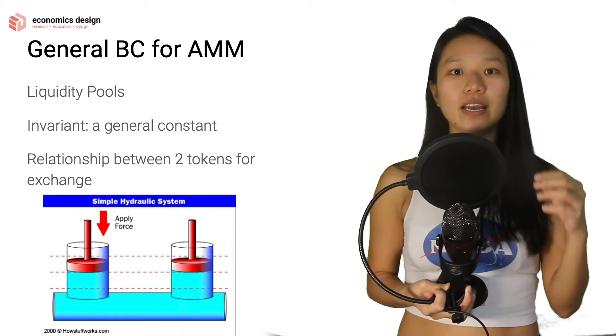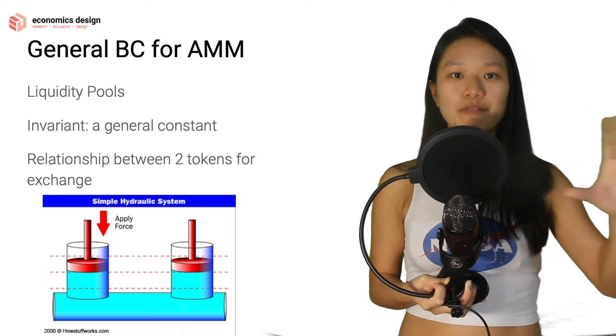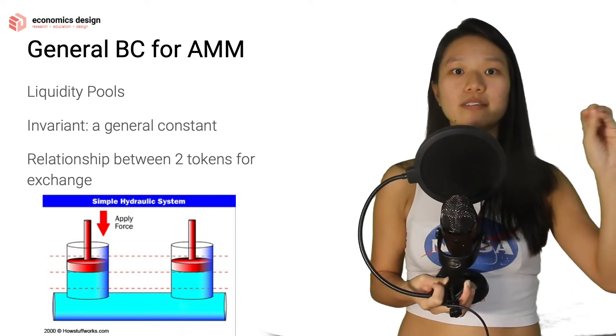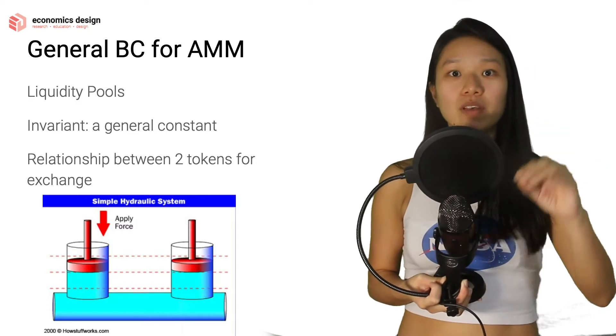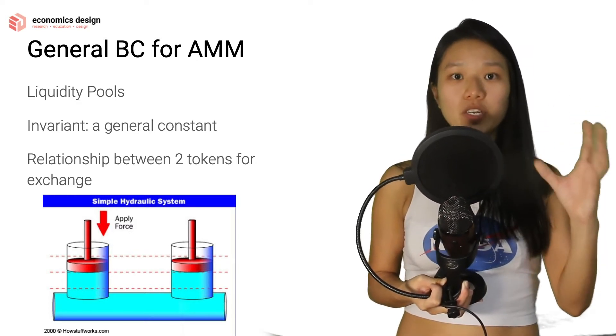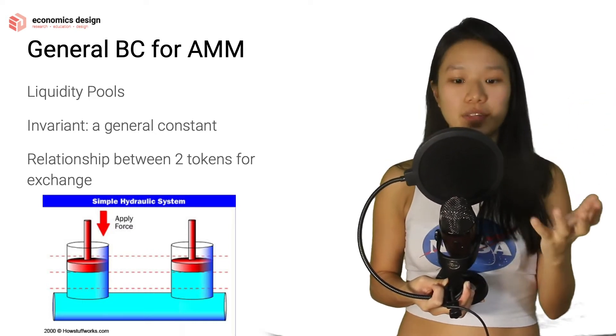And lastly, what does this AMM represent? Remember in token bonding curves we are looking at defining the relationship between token prices and token supply with this math function. In AMMs, once again the bonding curve is used to talk about the relationship between two different things, but what are the things?